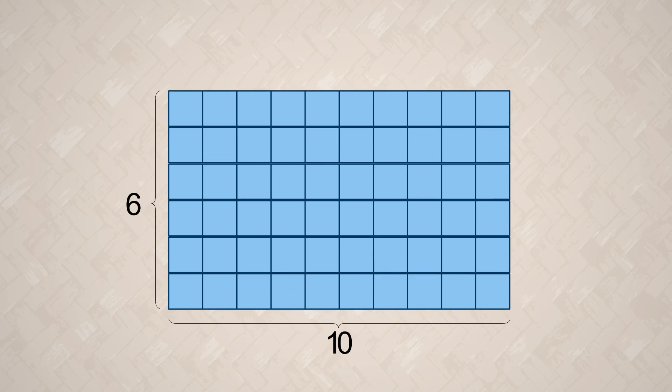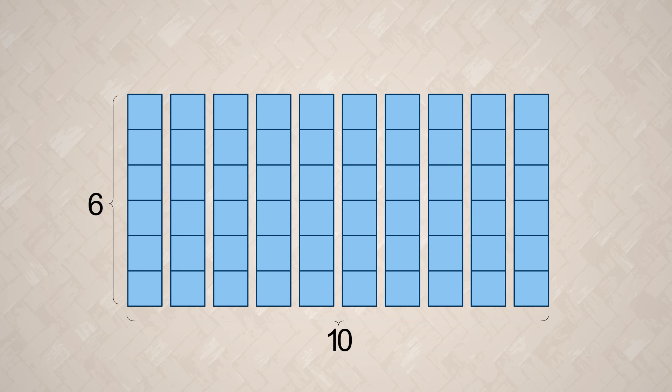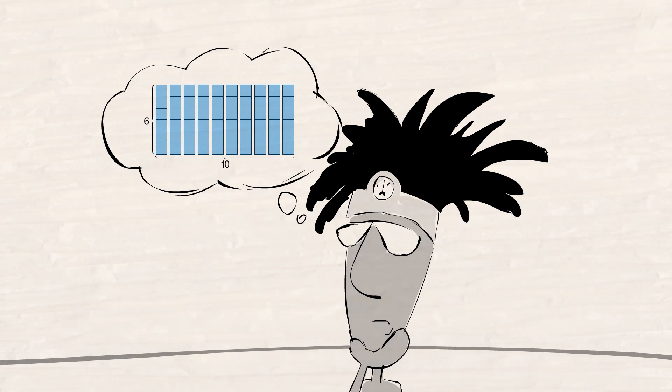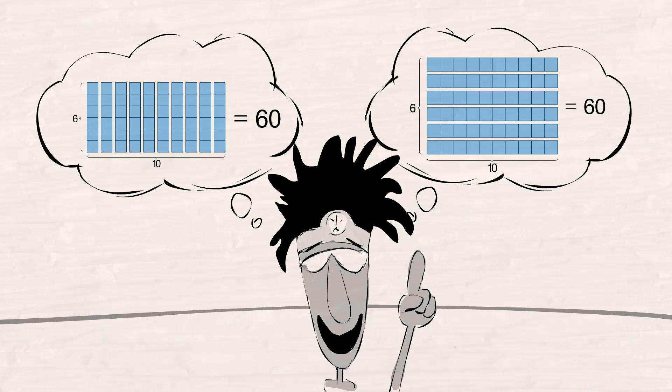But then someone suggested that it would be better to lay the tiles down in vertical rows instead of horizontal rows. We would then need ten rows of six tiles. At first we thought that this might require a different number of tiles. Then we realized that ten times six is also sixty.